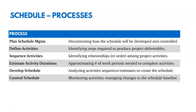Then we're going to sequence activities — identify relationships and the order among those activities. Then we're going to estimate activity duration, approximating how many work periods or days are needed to complete those activities. Then we develop the schedule by taking all of the activity sequences, estimates, and so on, and creating a schedule baseline. And then we control the schedule over time, monitoring activities and managing changes to the schedule baseline.